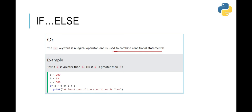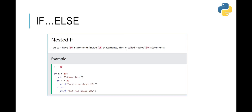Next we have the 'or' keyword. The 'or' keyword is also a logical operator used to combine conditional statements. We test: if a is greater than b OR if a is greater than c — if at least one of the conditions is true, we will print the statement. This is the concept of the 'or' keyword.